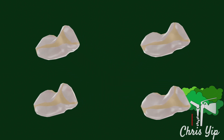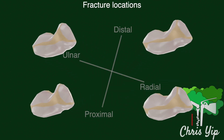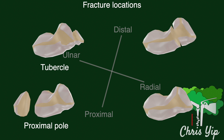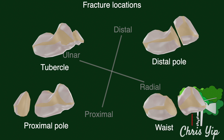The fractures can also be described according to their sites, including the tubercle fractures, the proximal pole fractures, distal pole fractures, and waist fractures, which are the most common.